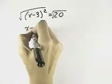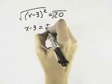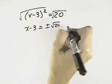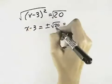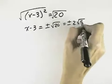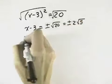On the left, that leaves us x minus 3. On the right, we have the positive and negative square root of 20, which can be simplified because 20 is 5 times 4. That's plus or minus 2 times the square root of 5 when we take out the square root of 4.